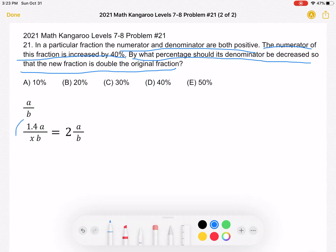So we have this new fraction, 1.4A over X times B. We don't know what X is. And we know that is equal to 2 times the original fraction AB. So next,